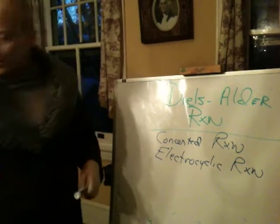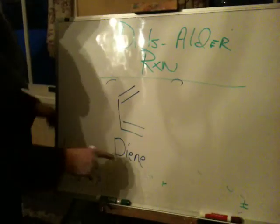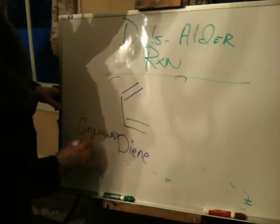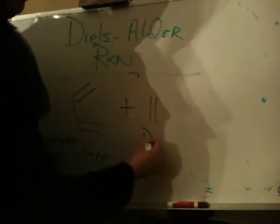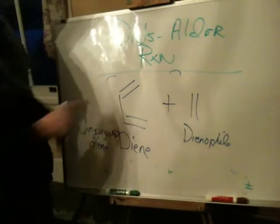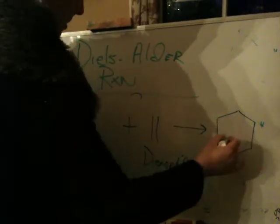What this reaction entails is taking two components. One component is called a diene — conjugated, meaning you have alternating single and double bonds. And then you react that with what we call a dienophile. What is a dienophile? It is something that loves a diene — like electrophile or nucleophile. In an electrocyclic manner, these two components react with one another.